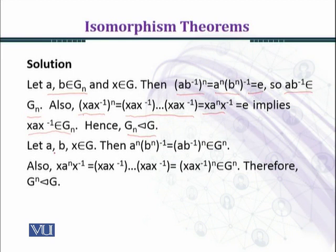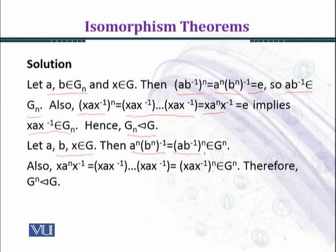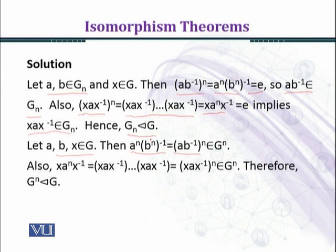Therefore G_n is the normal subgroup of G. Now for G^n: let a, b, x belong to G. Then a^n · (b^n)^{-1} = a^n · (b^{-1})^n = (ab^{-1})^n, which belongs to G^n by the closure property. We have verified the subgroup condition, and accordingly G^n is a subgroup of G.